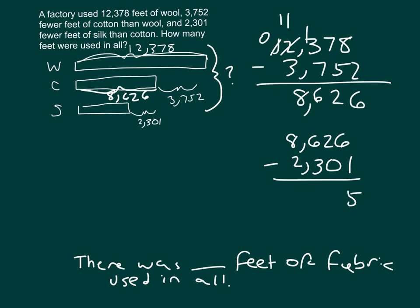6 minus 1 is 5. 2 minus 0 is 2. 6 minus 3 is 3. And 8 minus 2 is 6 — no regrouping needed. So we now have our three amounts for wool, cotton, and silk — all the fabric used in all.